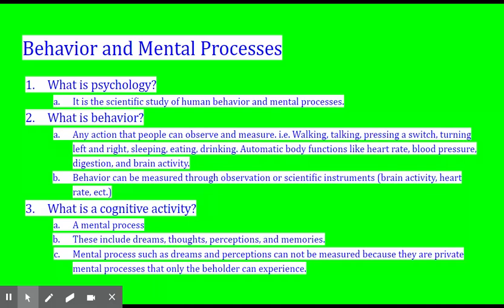What is a cognitive activity or mental process? These are different because they cannot be measured. They are private processes that only the beholder can experience. They include dreams, your thoughts, your perceptions about life, other people, and things, and your memories. Only you can dictate your memories — how you felt during an experience, only you experienced that. Our memory of the same event can be different because we both have different experiences.